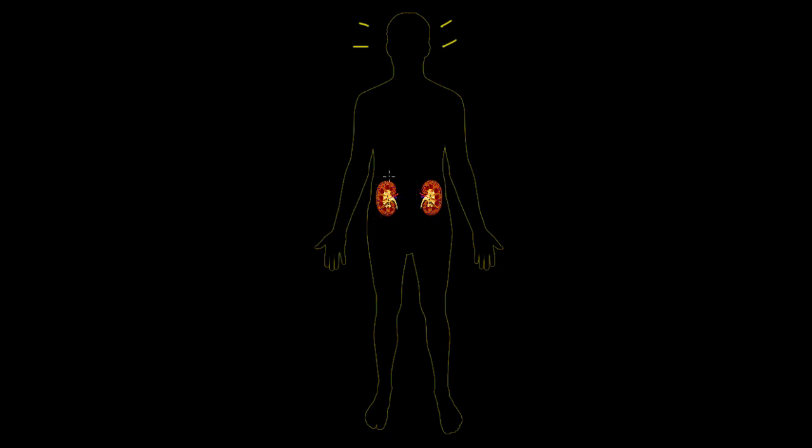As you can see, the kidneys sit right here around your belly button. They're about the size of a fist, and you've got two of them, and they sit a little closer to the back, not really in the front. So the kidneys receive blood from the heart, so the heart goes on up here. It's also about the size of a fist, and it pumps blood throughout the body.